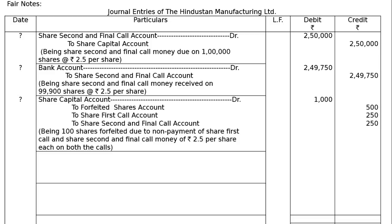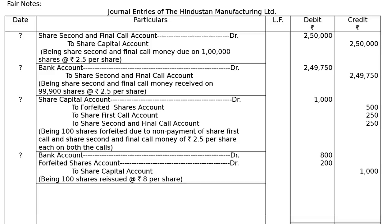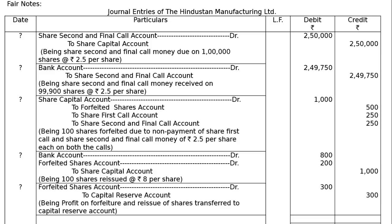These shares were reissued at Rs.8 per share fully paid. Bank Account debit: 100 × Rs.8 = Rs.800. Forfeited Shares Account debit: 100 × Rs.2 = Rs.200 (discount on reissue). To Share Capital Account: Rs.1,000 (100 × 10). Being 100 shares reissued at Rs.8 per share. Last entry: Forfeited Shares Account debited to Capital Reserve Account - profit on forfeiture and reissue transferred. Forfeited shares were Rs.500, discount on reissue Rs.200, so profit = Rs.300 capital reserve.